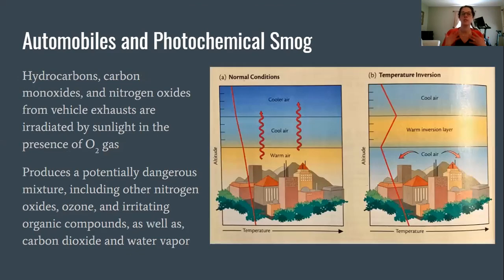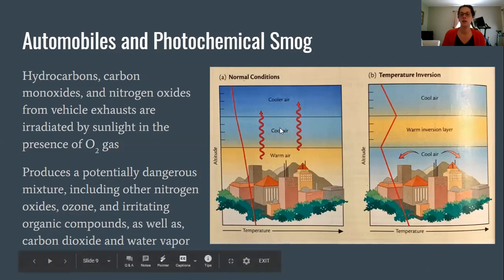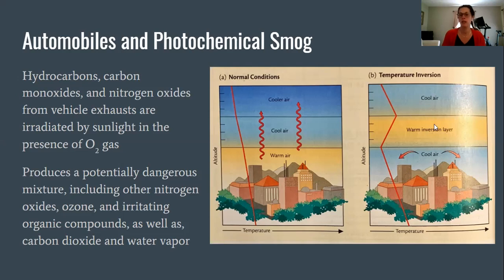Automobiles and photochemical smog: a bunch of substances come out of vehicle exhaust — hydrocarbons, carbon monoxides, nitrogen oxides — and they get irradiated by sunlight in the presence of oxygen gas, producing a dangerous mixture that includes other nitrogen oxides, ozone, irritating organic compounds, carbon dioxide, and water vapor, which are all greenhouse gases. Under normal conditions, warm air rises into cooler air. What happens with photochemical smog is a temperature inversion — cool air goes down and up, with a warm inversion layer in the middle. This is where the smog settles over the city: not at ground level but a bit higher, with cooler air below it.